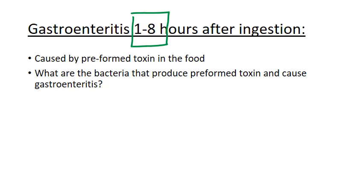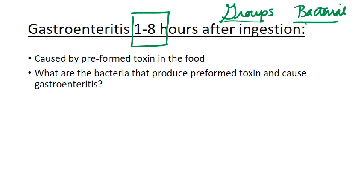Scenario one: gastroenteritis one to eight hours after ingestion. Anytime you have a group — and remember, this only works for groups — and this really only works for bacterial diarrhea; it won't help you with viral diarrhea, the syndromes are too simple. But if we're talking about a group of people who have bacterial gastroenteritis and it hit one to eight hours after ingestion, it's due to a preformed toxin on the food. There isn't time for anything else to act that quickly.